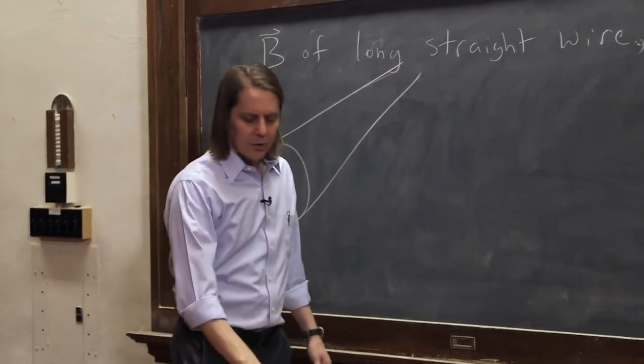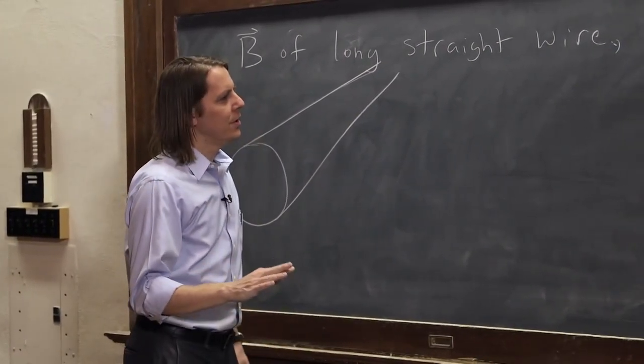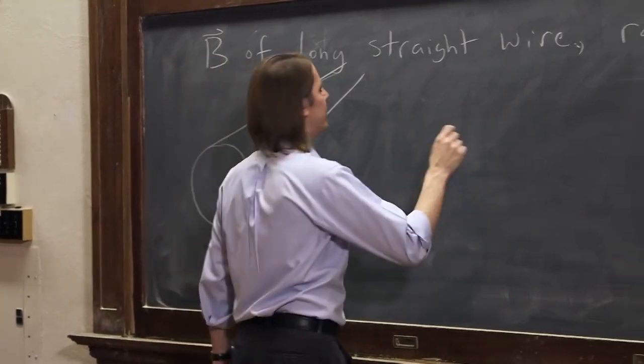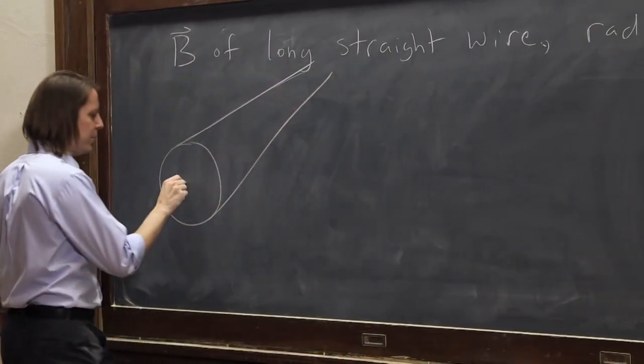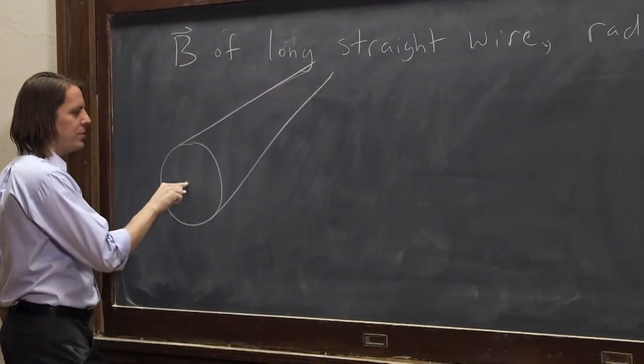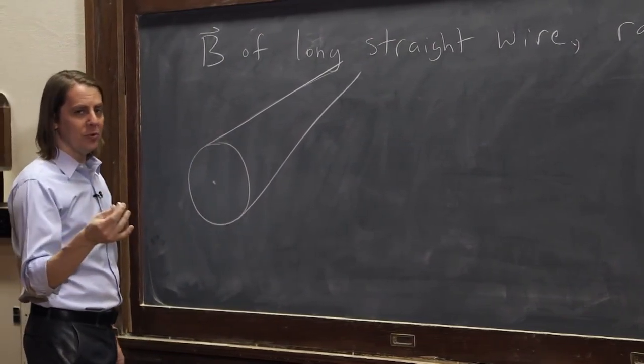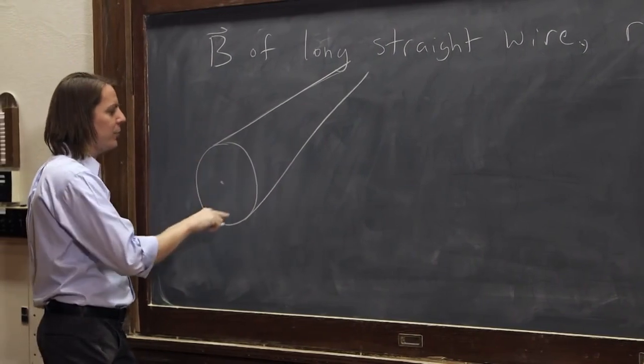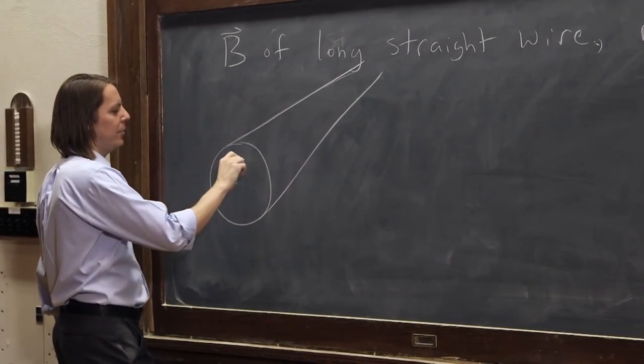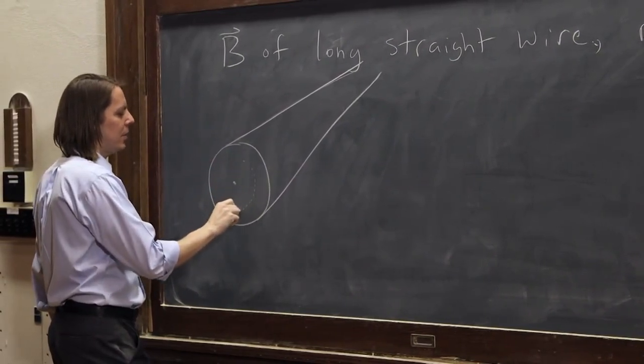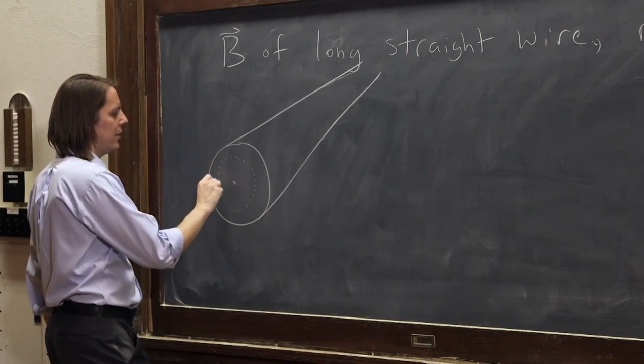We want to actually calculate the B field inside and outside. So let's think of this now. Let's imagine our coordinate system is here, our origin is here, and we want to go out in radius and we want to draw our Ampereian loops, is what they're called, in some real symmetric way. So we want to center them on the same axis as the wire, like that.